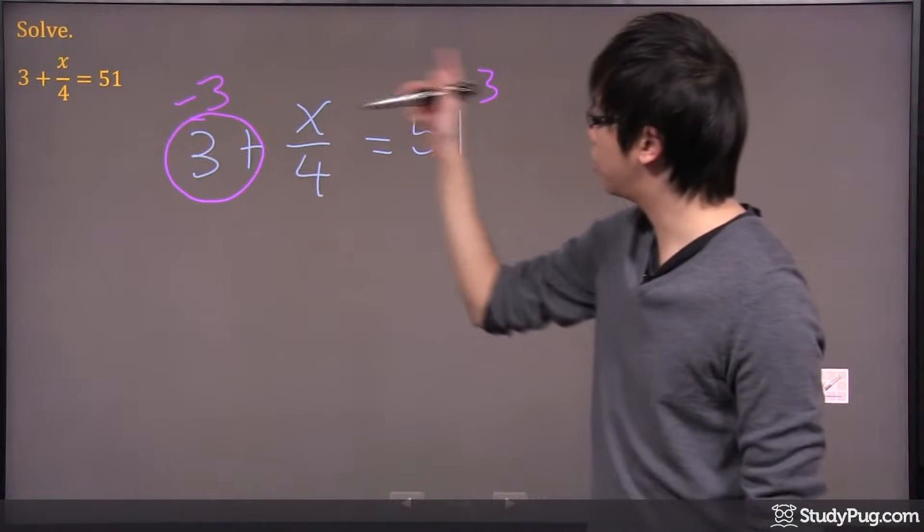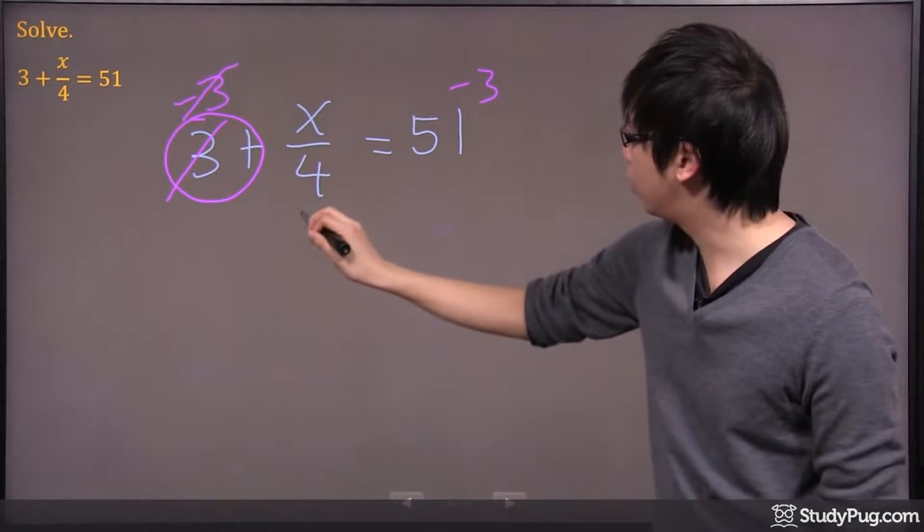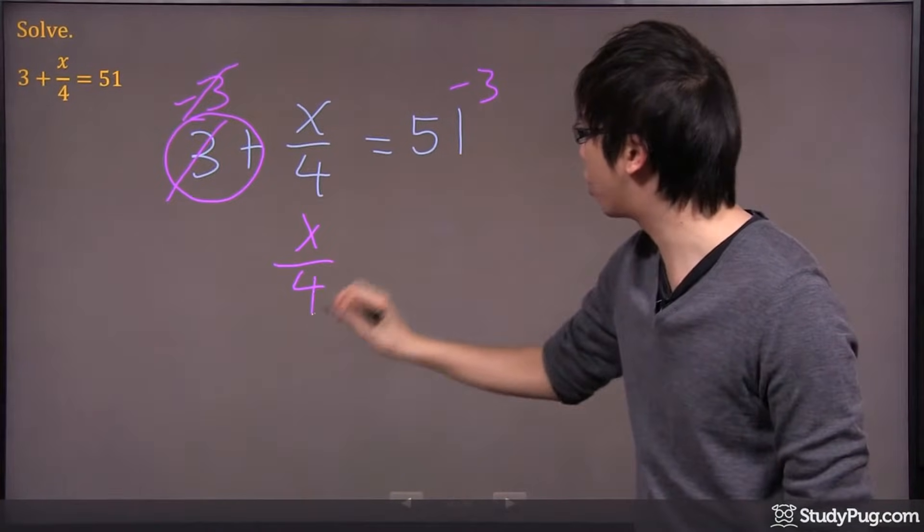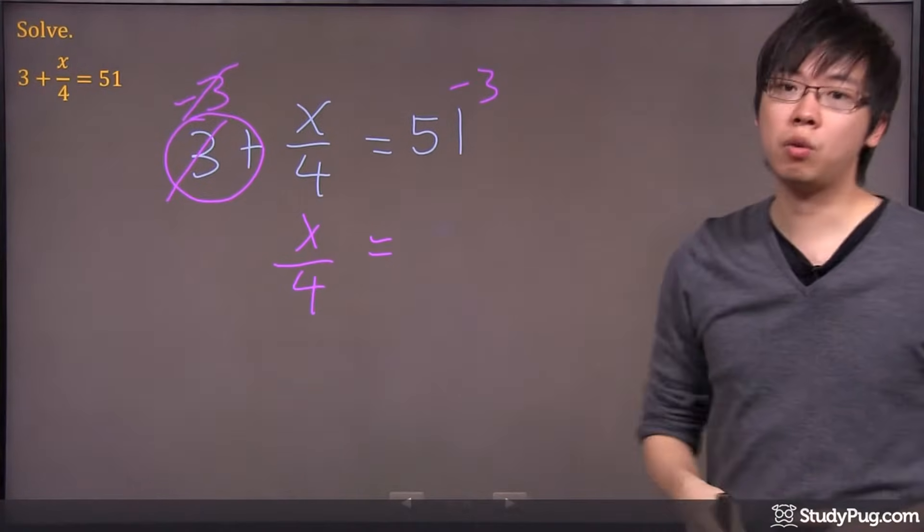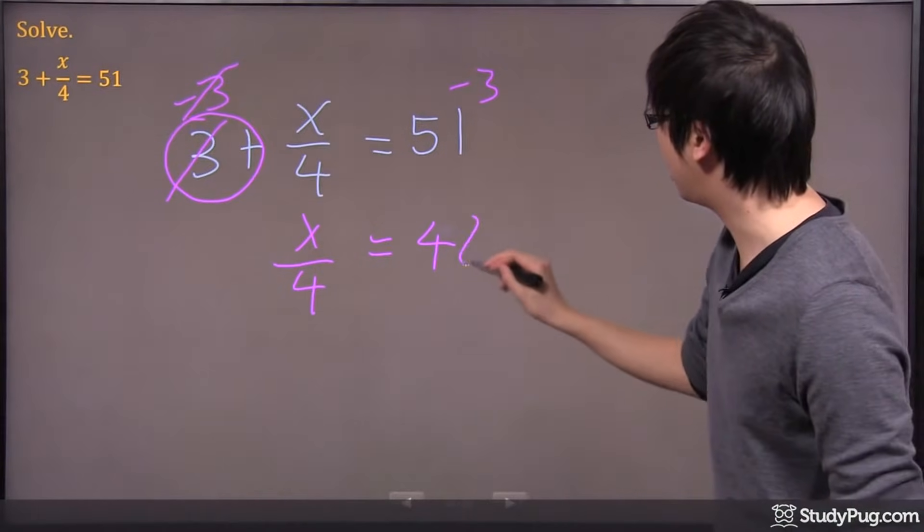So by doing that, negative 3, negative 3, that cancels the 3 here. You're left with just x over 4, and over here is 51 minus 3. That gives you just 48.